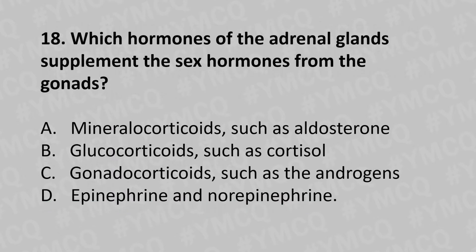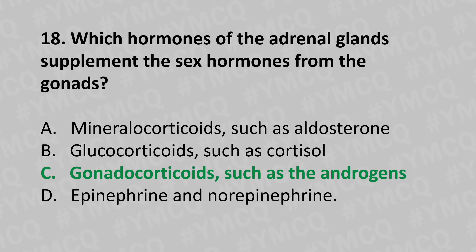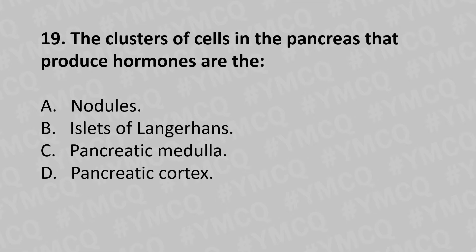Moving to our eighteenth question. Which hormones of the adrenal gland supplement the sex hormones from the gonads? Option A: mineralocorticoids such as aldosterone. Option B: glucocorticoids such as cortisol. Option C: gonadocorticoids such as androgens. Option D: epinephrine and norepinephrine. And the answer is Option C: gonadocorticoids such as androgens.